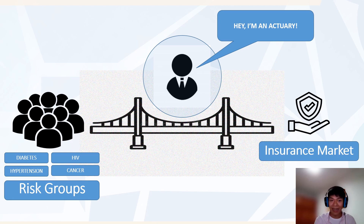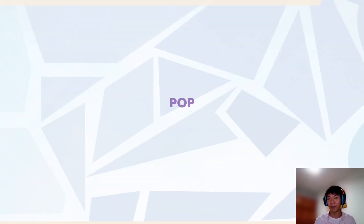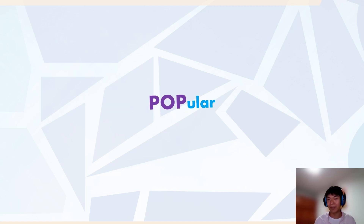But we actually can change it. We can build a bridge to link these risk groups to the insurance market. How? We can create an ultimate life insurance. I'll call it POP — a product from another planet. And I think it will be really popular in the future.